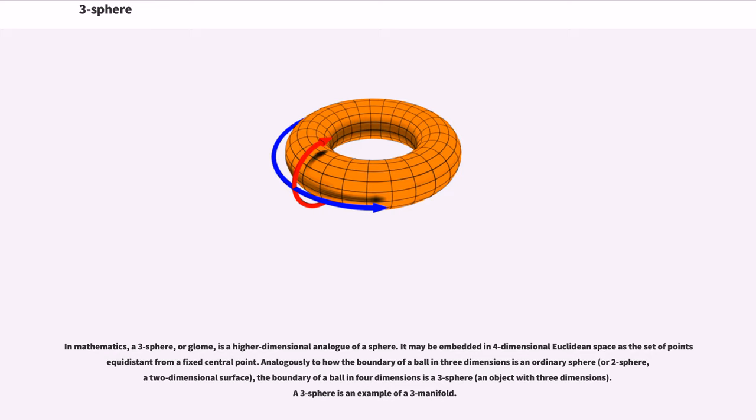It may be embedded in four-dimensional Euclidean space as the set of points equidistant from a fixed central point. Analogously to how the boundary of a ball in three dimensions is an ordinary sphere, the boundary of a ball in four dimensions is a three-sphere.